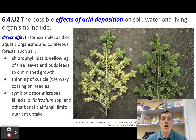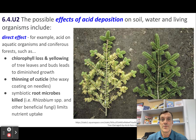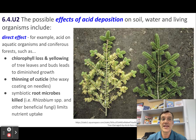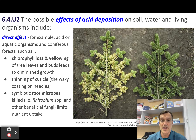Acid deposition can have harmful effects on the environment depending on the acidity level and the sensitivity of the ecosystem. There can be both direct and indirect effects on living systems. Direct effects can directly damage aquatic organisms and coniferous forests by lowering the pH of water and soil. For example, fish eggs and larvae may not survive in acidic water, and the needles of coniferous trees may turn brown and fall off, as you can see in this image here, meaning they are not photosynthesizing properly.